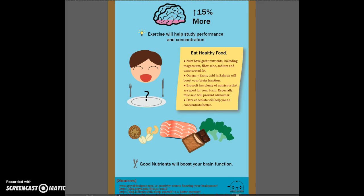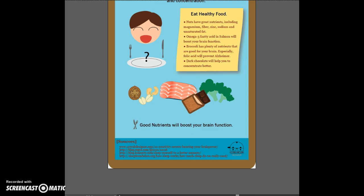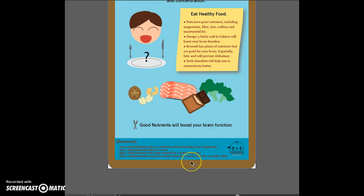The last section is about the food that can help your brain function, and these are the food images that I created. I created all the illustrations through Adobe Illustrator, and in the last section I cited all the sources that I used for my infographic.